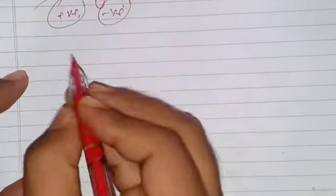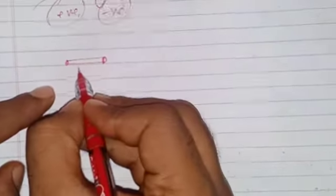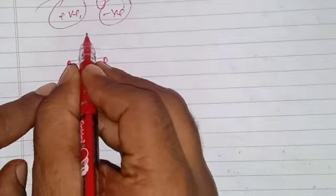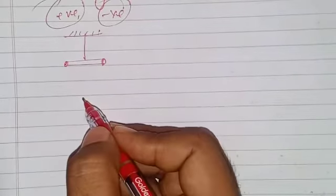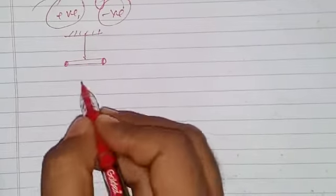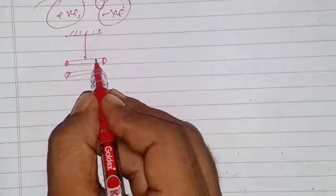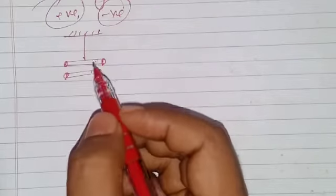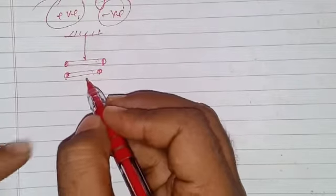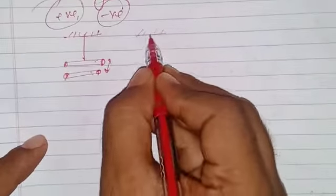In experiment one, a glass rod was rubbed with silk and suspended from a rigid support. Another glass rod, also rubbed with silk, was placed near it. Since both glass rods were rubbed with the same substance (silk), they acquired similar charges, and repulsion was observed.